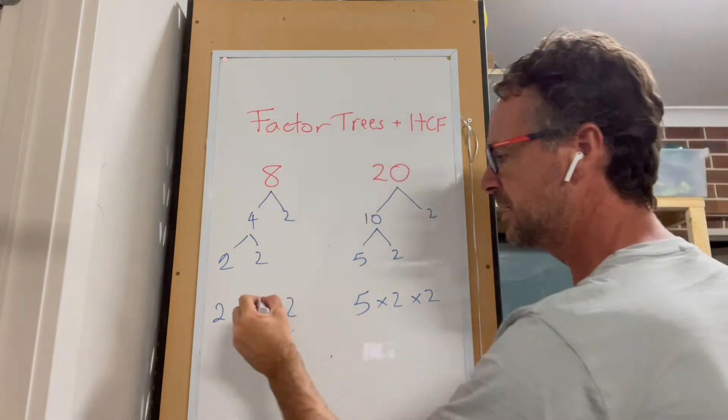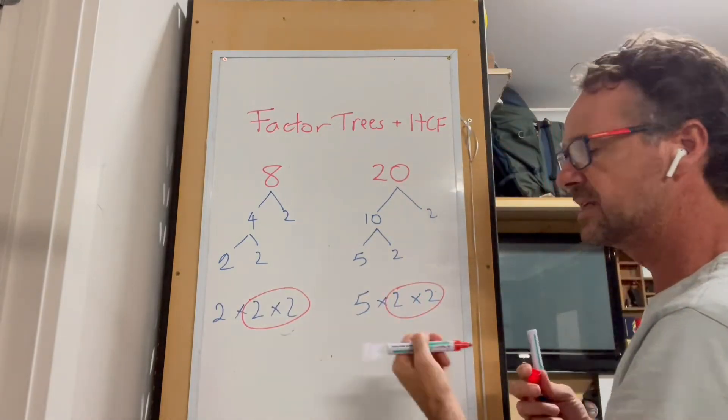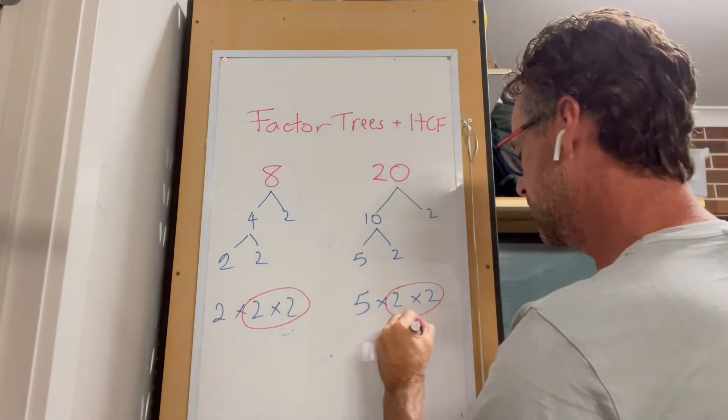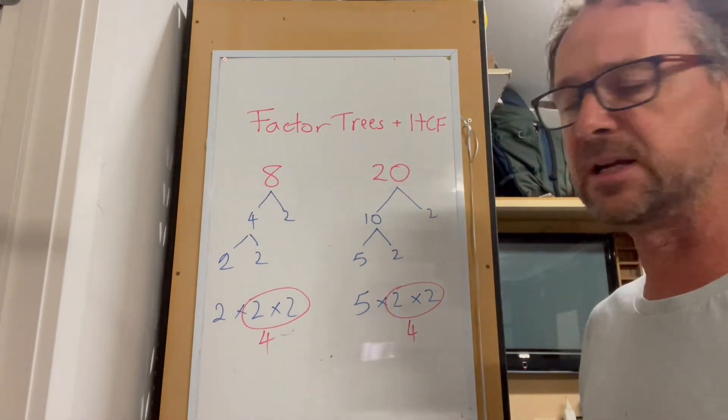That tells us that 4 is the highest common factor for those two particular numbers, and we could do that for any numbers that we choose.